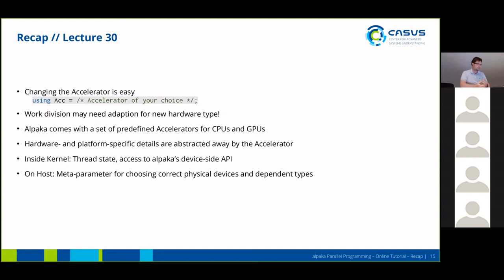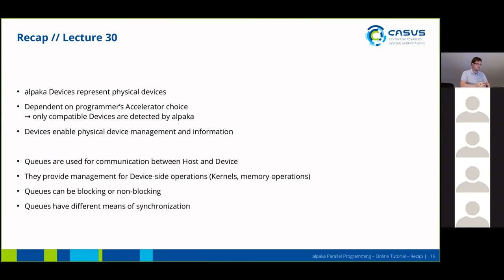Hardware and platform-specific details are abstracted away by the accelerator. Inside the kernel, the accelerator contains the thread state and also gives you access to Alpaca's device-side API. On the host, the accelerator is a meta-parameter for choosing the correct physical devices and all dependent types, like the Alpaca device and the queue. Alpaca devices represent physical devices and are dependent on the programmer's accelerator choice, meaning only compatible devices are detected by Alpaca. Alpaca devices enable physical device management and information, giving functionality to the host side.